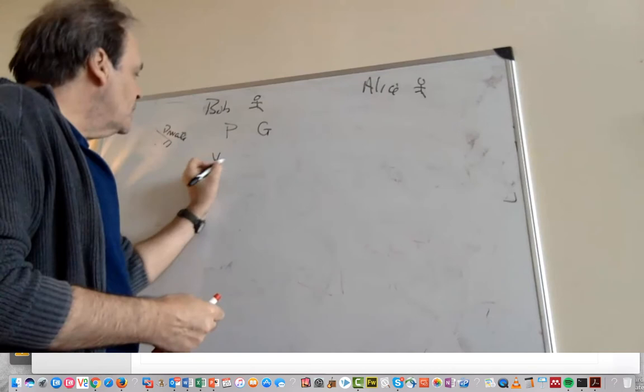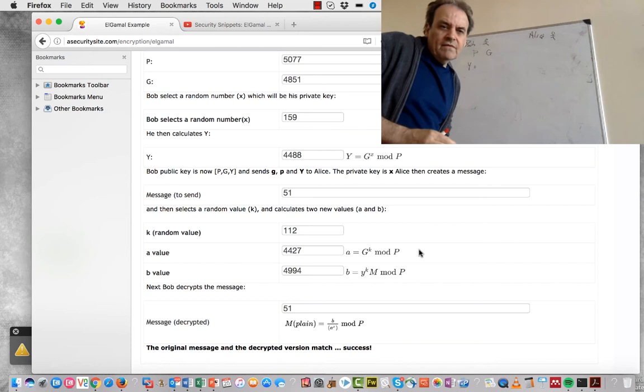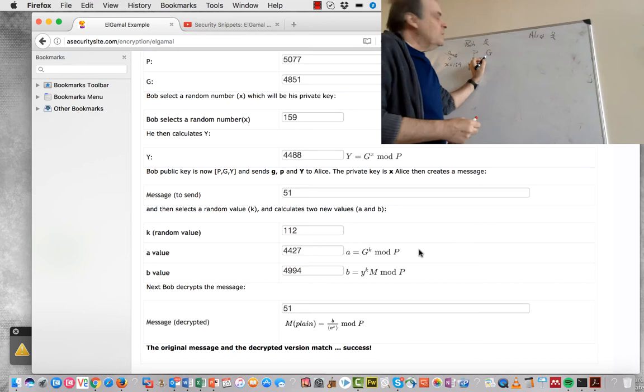The first thing we do is determine our private key as a random value X. So let's take a random value of 159. And we'll take a prime number of 5077 and the G value of 4851.